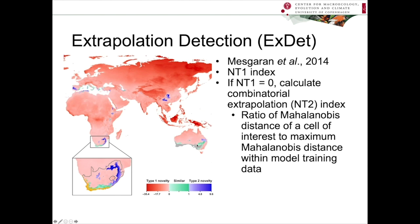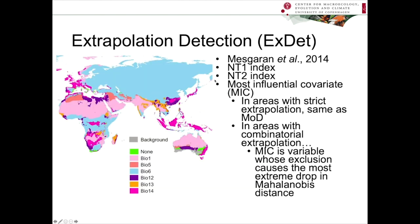Similarly to MESS, XDET also calculates the most influential covariate (MIC). In areas with strict extrapolation, this is the same as MOD, which we've already discussed. But in areas with combinatorial extrapolation, MIC is the variable whose exclusion causes the most extreme drop in Mahalanobis distance. So it's able to calculate this most extreme variable even in areas with combinatorial extrapolation, whereas MESS only calculates it for areas with strict extrapolation. This plot looks rather similar to the MOP plot shown earlier, although for a different model and region.